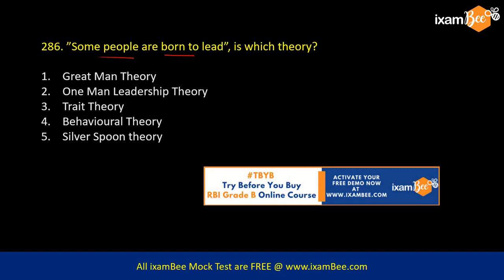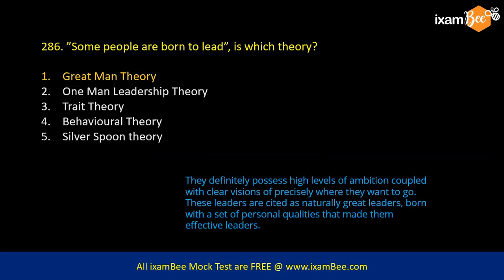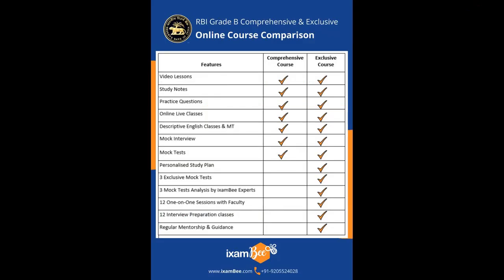Some people are born to lead — which theory of leadership is this? The answer is the Great Man Theory. This theory says there are people who definitely possess a high level of ambition with a clear vision of precisely where they want to go in their life. These leaders are cited as naturally great leaders, born with a set of personal qualities that make them effective leaders. This type of question was asked in the 2018 exam.